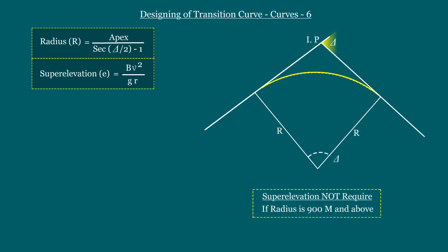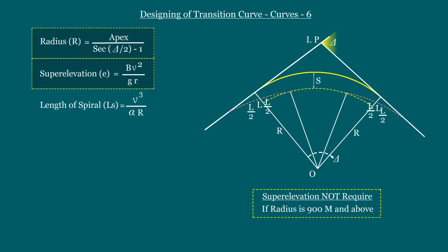Now we will assume that the superelevation and the transition curve are required, and we will go further to design the transition curve. The fifth step is to calculate the length of the transition curve to implement the superelevation and to introduce the centrifugal force gradually. The formula to calculate the length of the spiral curve ls equals v³/(α·r), where v is the design speed in meters per second, R is the radius of the circular curve, and alpha is the rate of change of radial acceleration in meters per second squared.